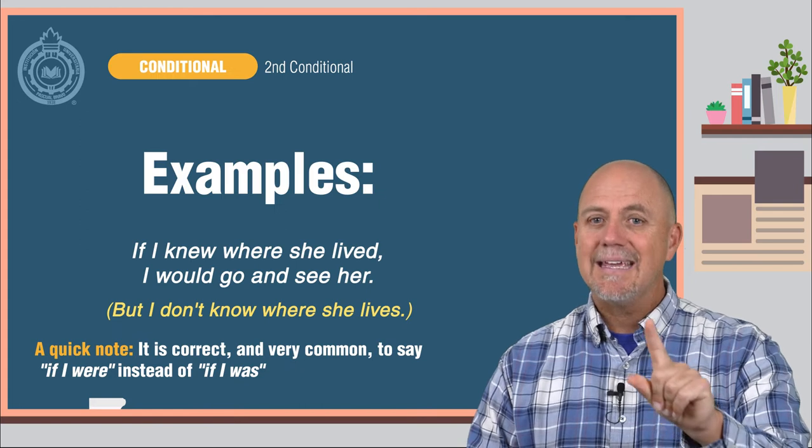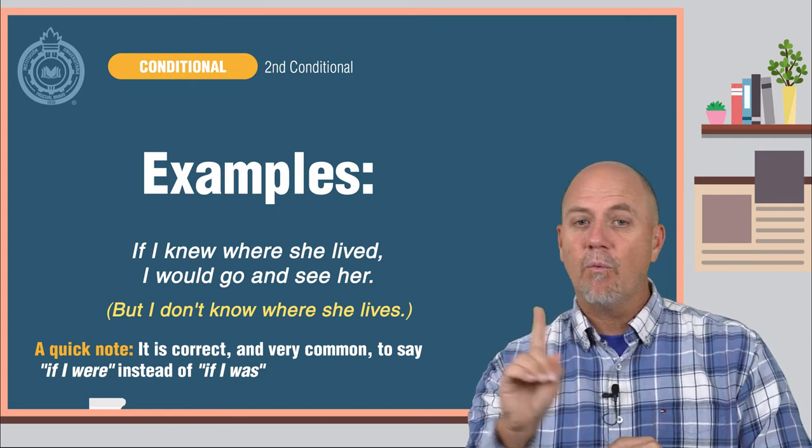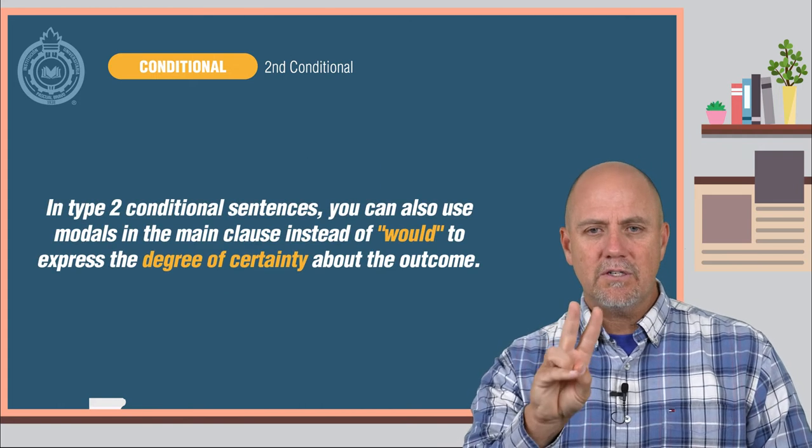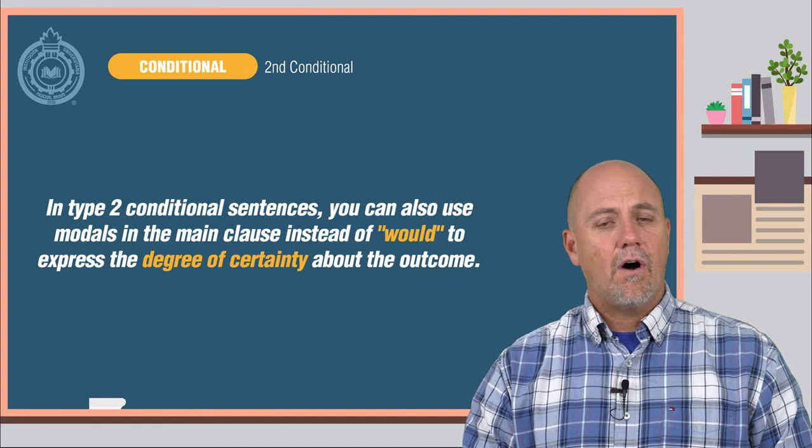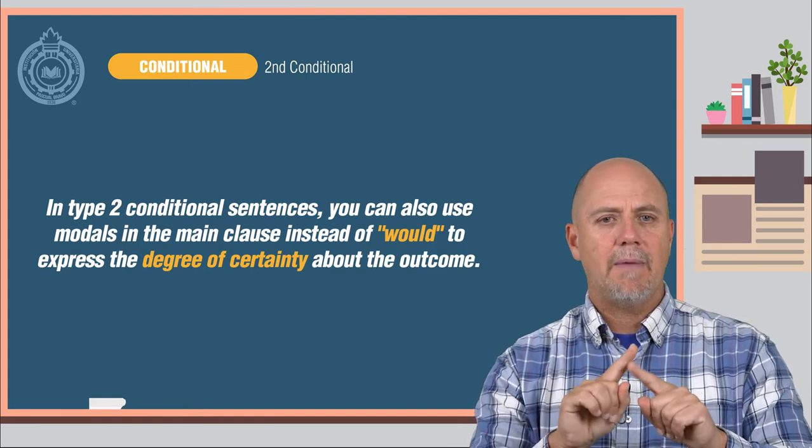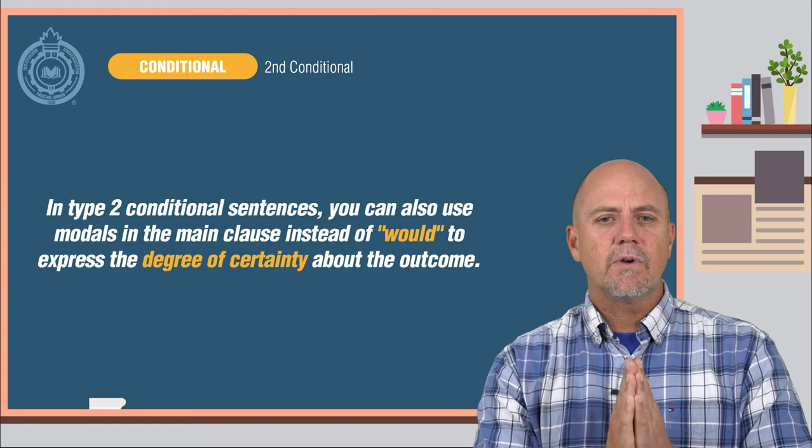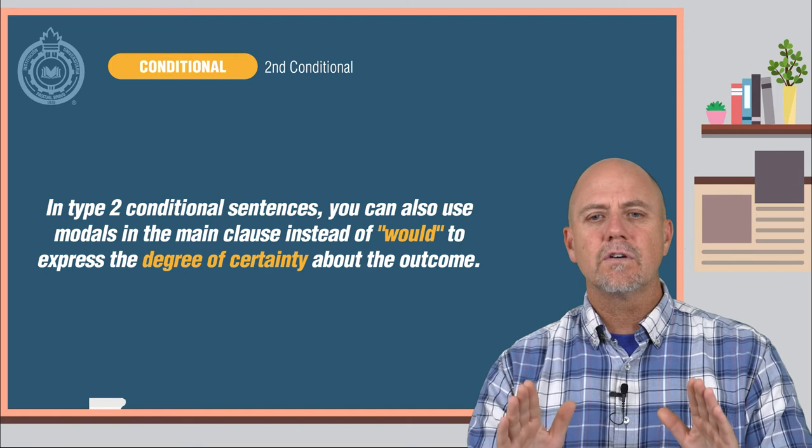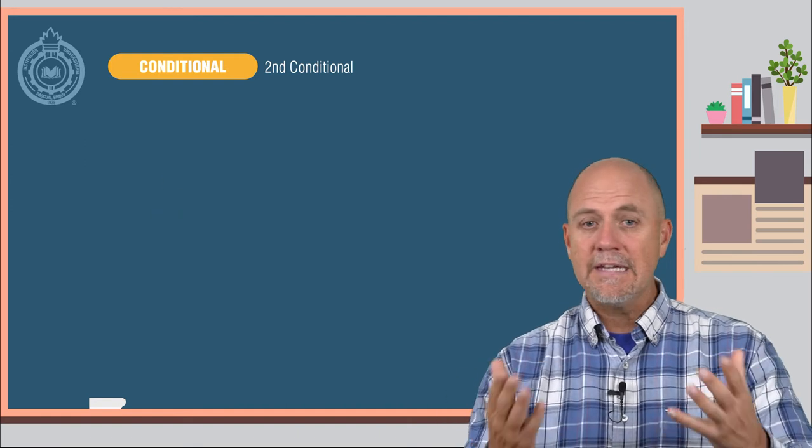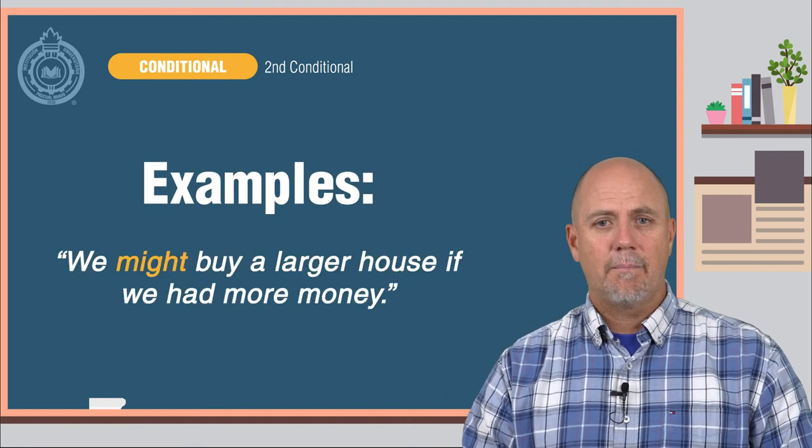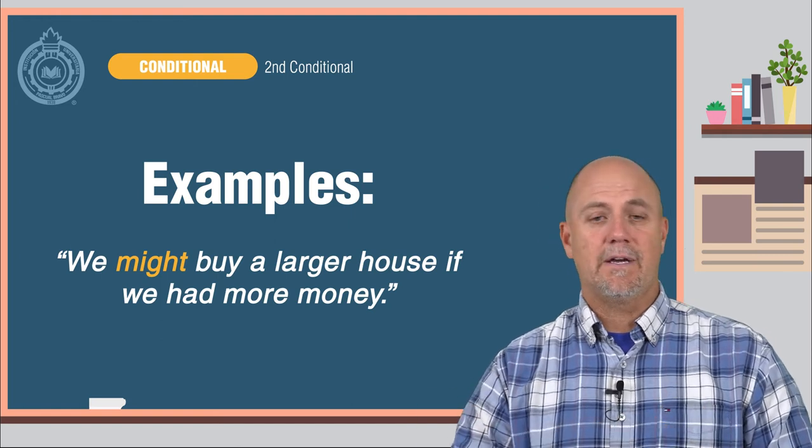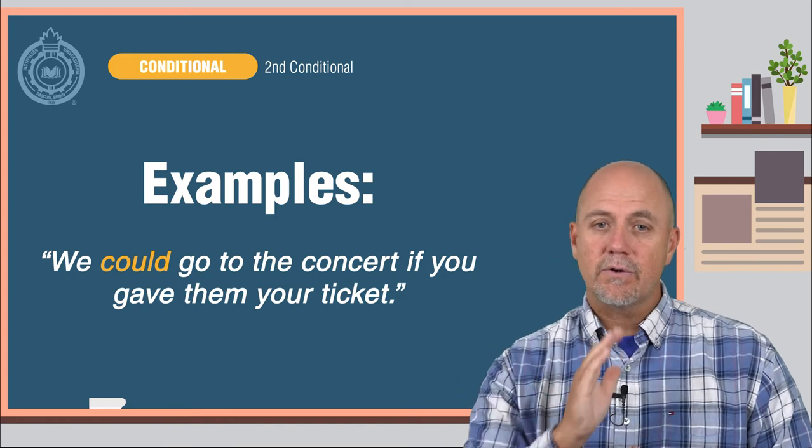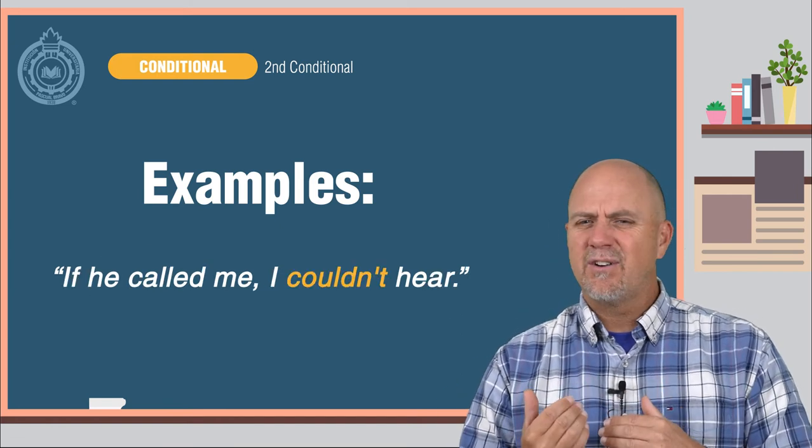A quick note, it is correct and very common to say if I were, instead of if I was. In type 2 conditional sentences, you can also use modals in the main clause instead of would to express the degree of certainty about the outcome, just like in the first conditional. Here are some examples. We might buy a larger house if we had more money. We could go to the concert if you gave him your ticket. If he called me, I couldn't hear.